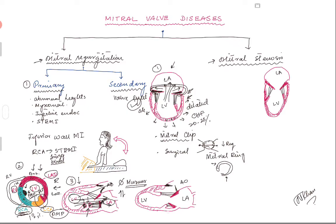You may not hear a murmur because there is rapid equalization of pressures between the left ventricle and left atrium. This is an acute process - the left atrium had no chance to dilate and is still compliant. When the left ventricle contracts, blood rapidly goes into the left atrium; that rapid pressure equalization means no turbulence and no murmur. The non-compliant left atrium cannot accommodate the blood and pushes it into the pulmonary veins and then to the lungs.